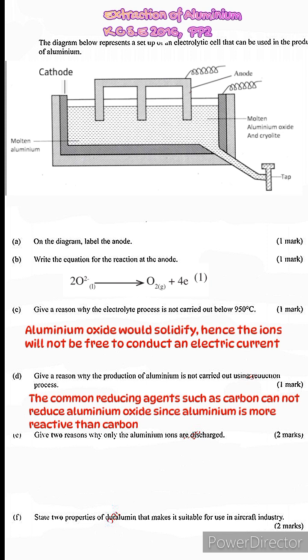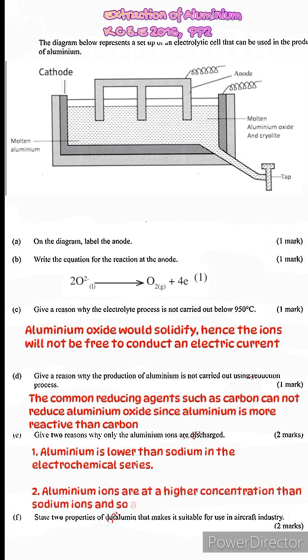E. Give two reasons why only aluminum ions are discharged. Now in case you're wondering what other ions could possibly be discharged apart from aluminum ions, then please take a look at our diagram above. In our diagram you'll find that in our molten mixture we have two compounds: aluminum oxide and sodium cryolite. So actually we are going to have two ions migrating towards the cathode - sodium ions and aluminum ions. But only aluminum ions are discharged. Now this is for two reasons. Reason number one is that aluminum is lower in the electrochemical series than sodium. So that means that aluminum is less reactive than sodium and therefore less energy is required for aluminum to gain electrons than sodium. Reason number two is because aluminum ions are at a higher concentration compared to sodium ions and therefore they are preferentially discharged.